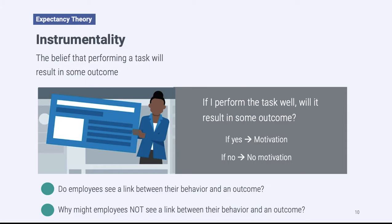Why might an employee not see a link between their behavior and an outcome? Perhaps you work in an organization where the person who's been there the longest gets the promotion — if you're new, you know that no matter how hard you work, you're never going to get it. You might also work somewhere with a lot of corporate politics, where it's not about how hard you work but more about who you're friends with. If you're not friends with the boss, you won't get the promotion, so employees aren't going to feel motivated to work hard because they don't see that link between behavior and outcome.